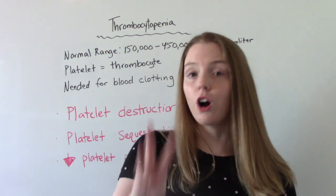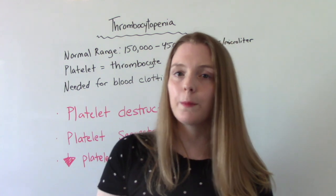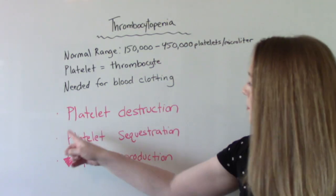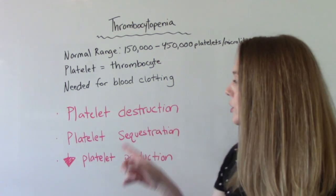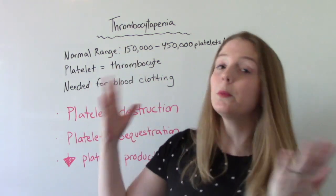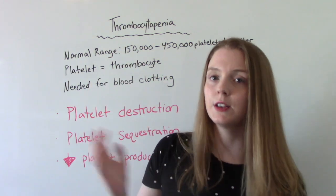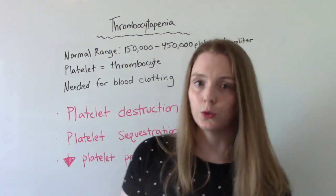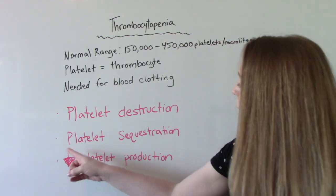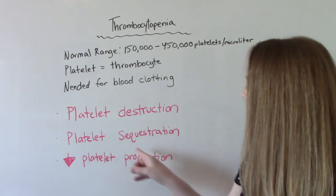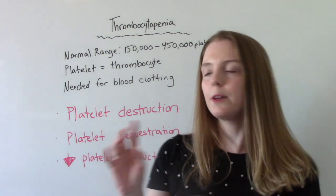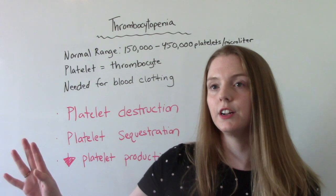There are three causes of thrombocytopenia. It could be platelet destruction — your body is making the normal amount of platelets but they're being destroyed. And we'll talk about some examples. Platelet sequestration — think about this word sequester.